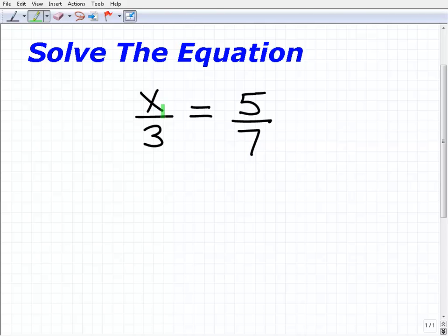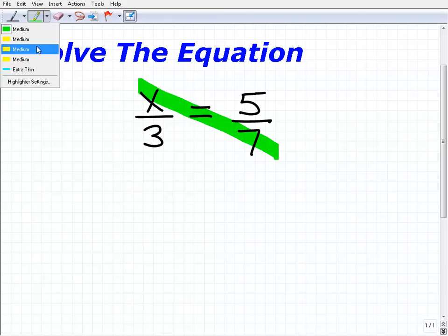What I can do is I can multiply across. So in other words, I can take x, multiply it by 7, and that is going to be equal to 3 multiplied by 5.